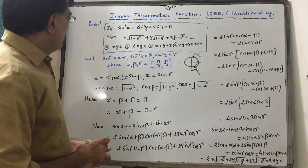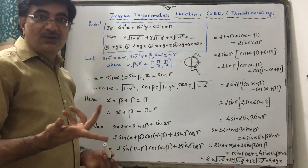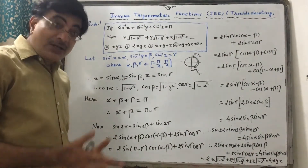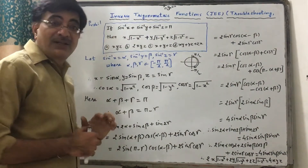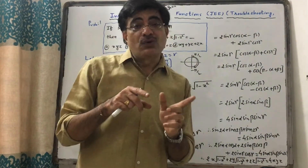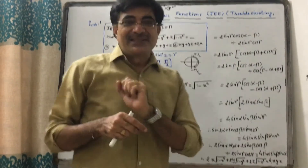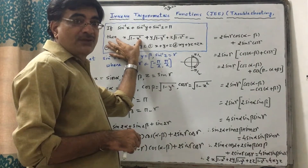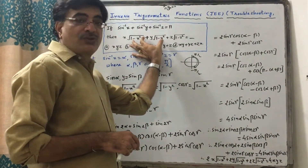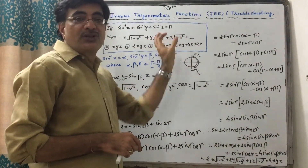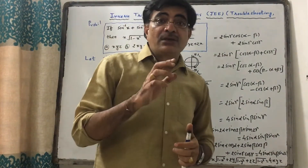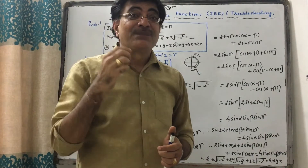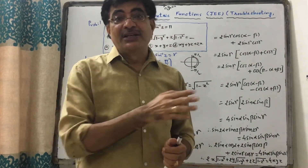Now, what is the key idea to solve this problem? Because we have x·√(1 − x²), which is sinα·cosα. If we multiply sinα·cosα by 2, it becomes sin2α. So we can write the expression as ½·(sin2α + sin2β + sin2γ). That means we need to find the simplification of sin2α + sin2β + sin2γ.